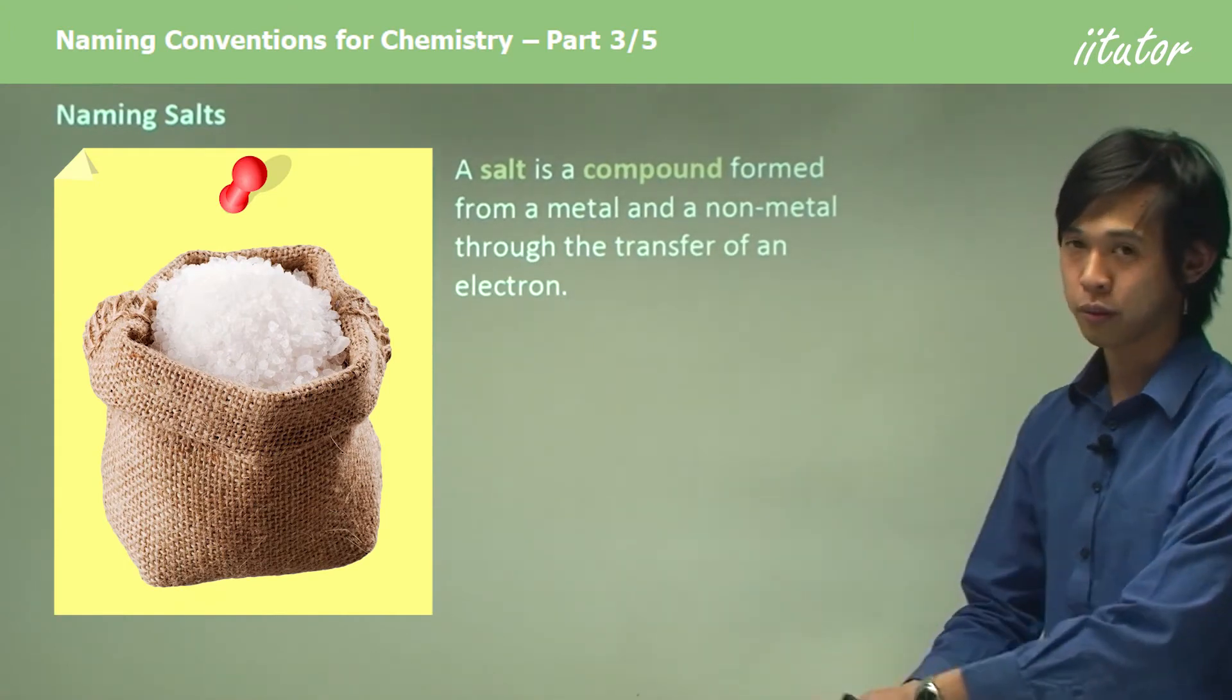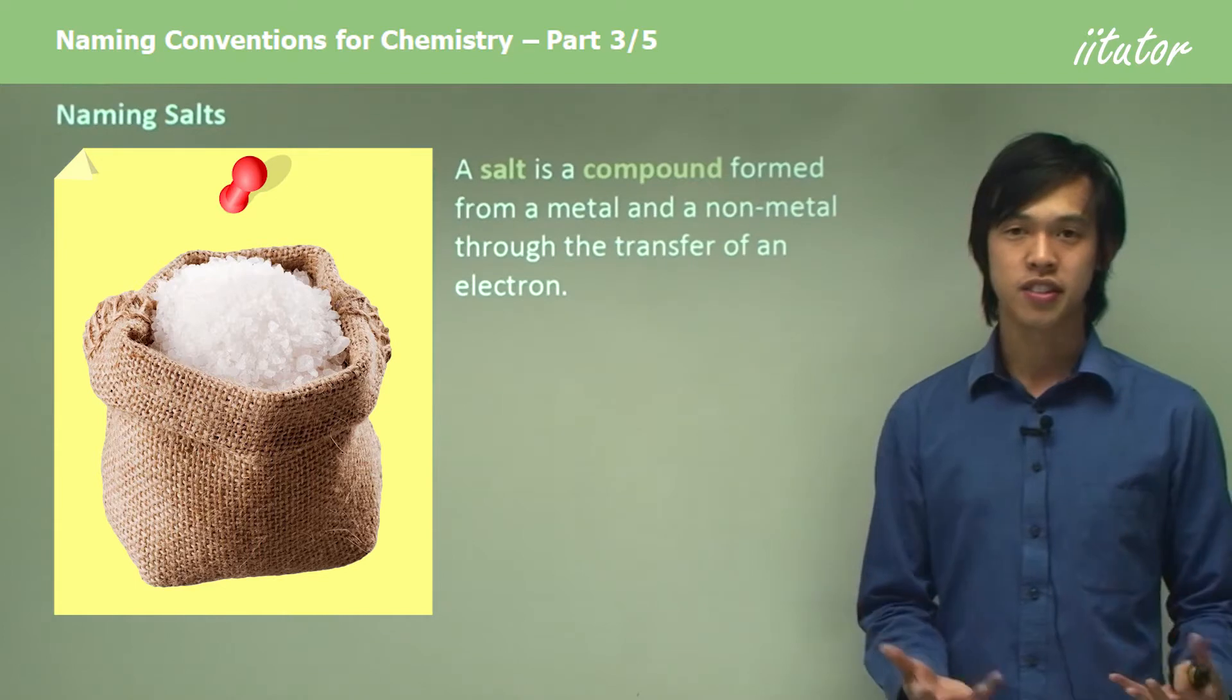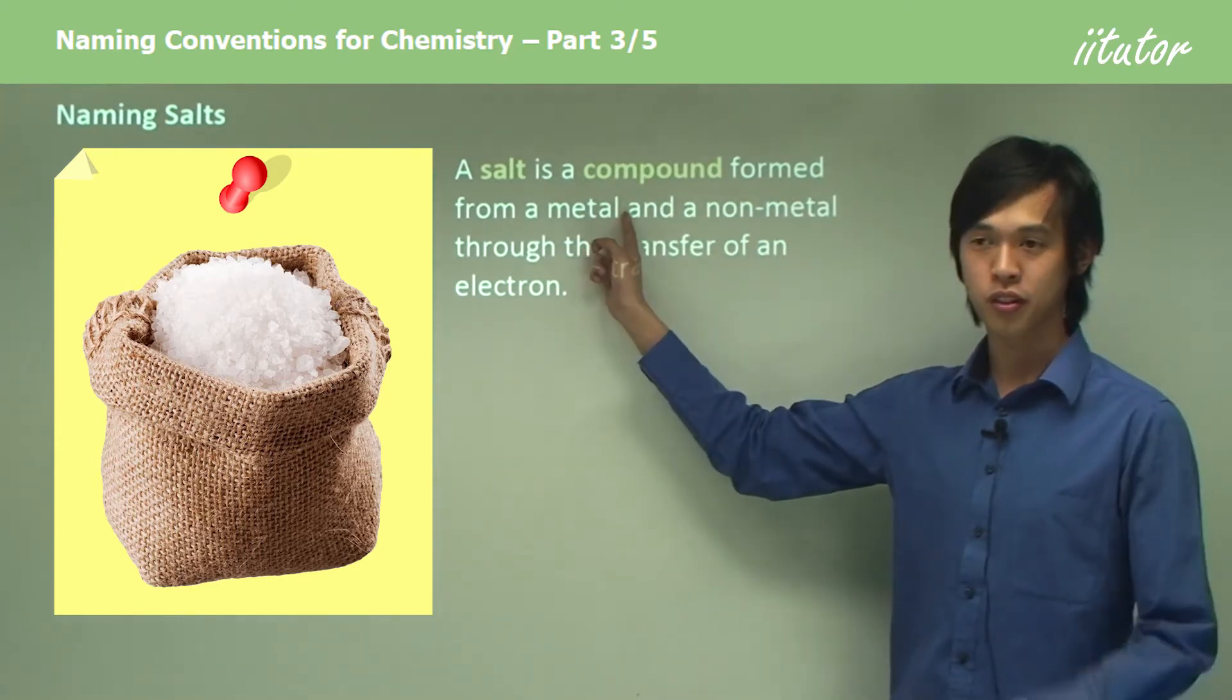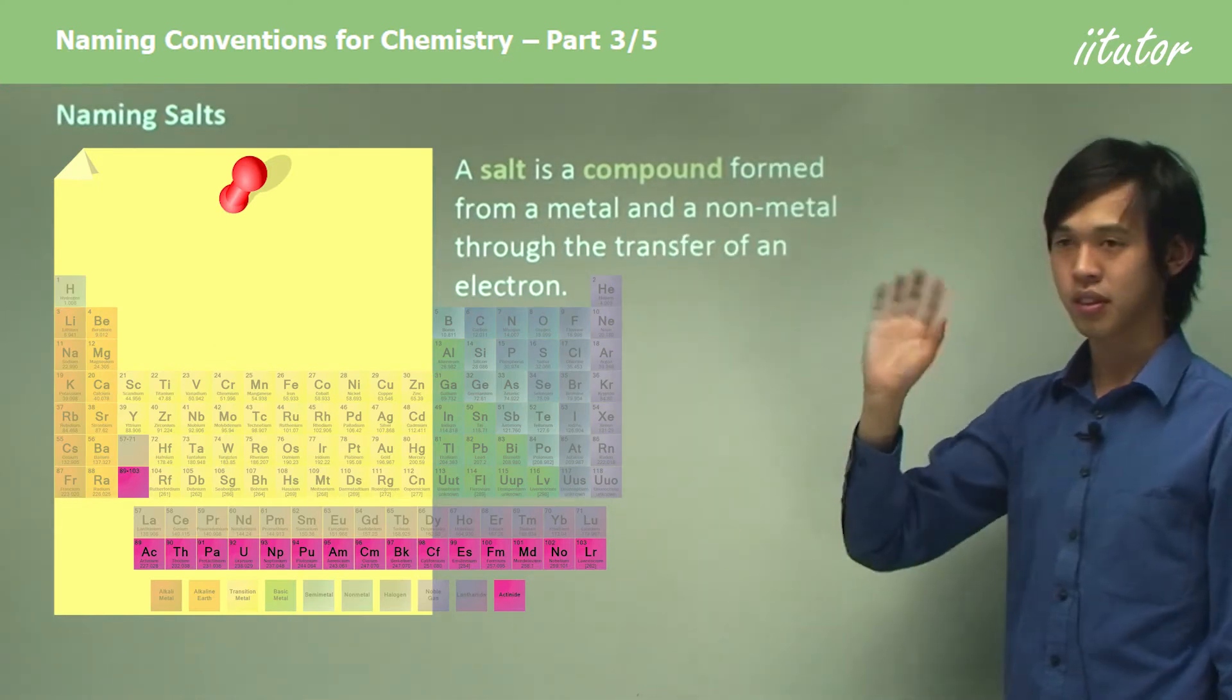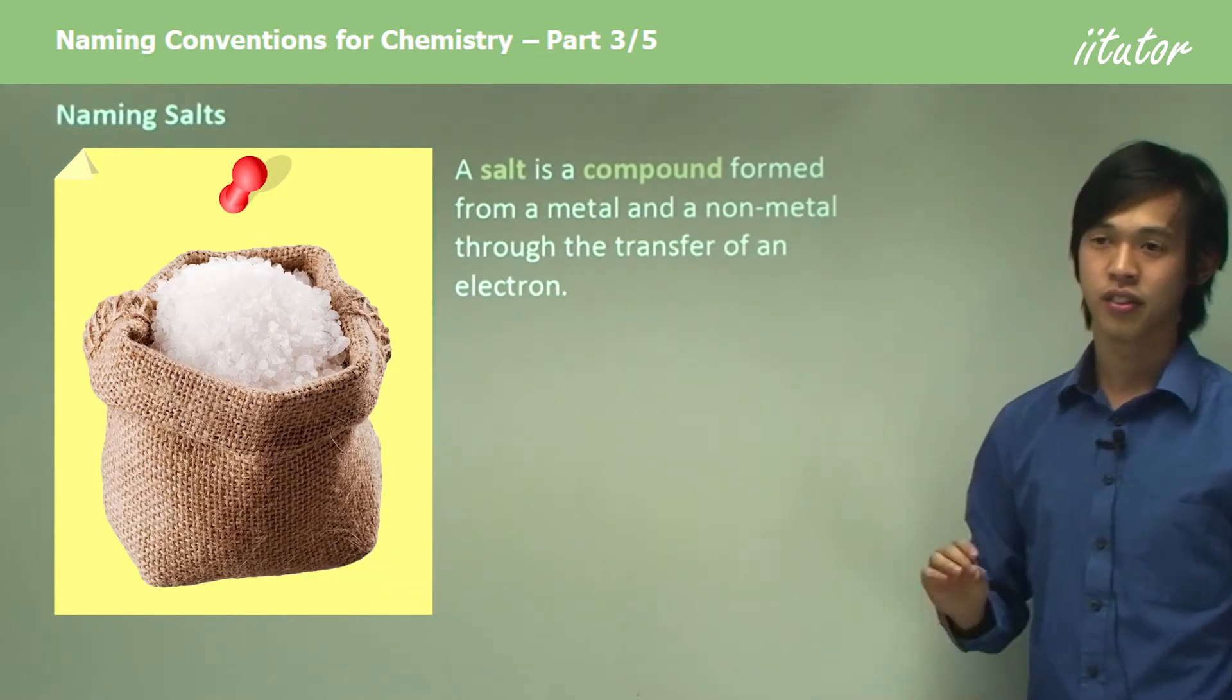Okay, so now that we've seen the different types of formula, we're going to try and name salts now. Now, what is a salt? Well, a salt is simply a compound formed from a metal, so the left-hand side of the periodic table, and a non-metal, so the right-hand side of the periodic table, through an electron transfer reaction.